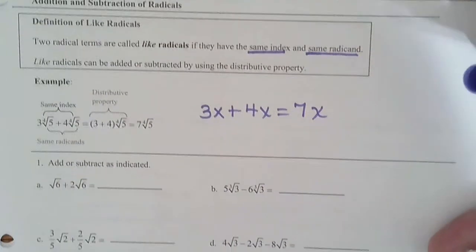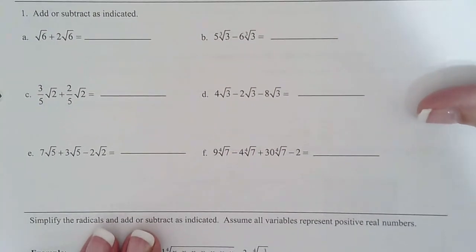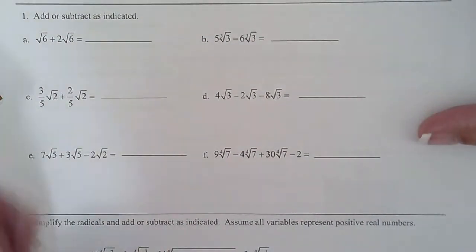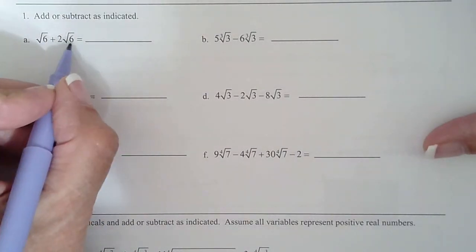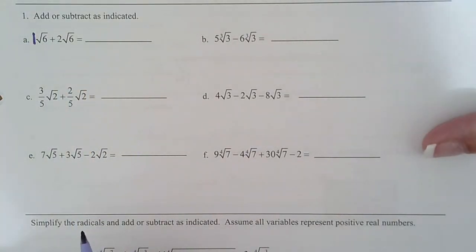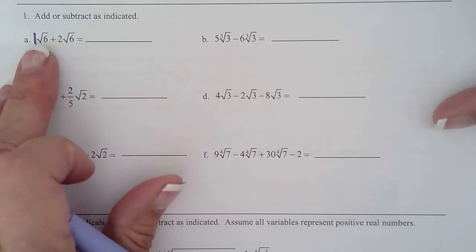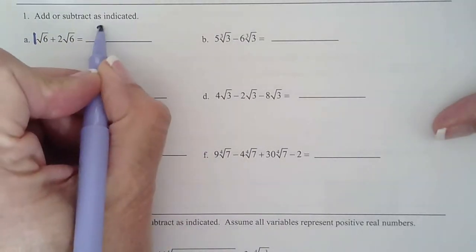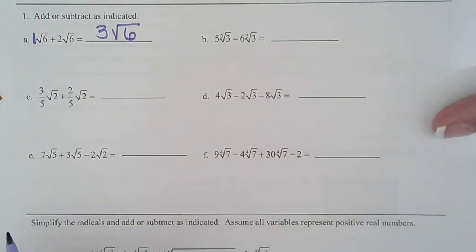So we're going to start off real nice and easy. So on A, are these like terms? Absolutely. They're both a square root. They both have a radicand of 6, just like an x. There's an imaginary one in front and I would put that in because a lot of students, just like with x's, think it's 0 rad6, but it's 1. So 1 rad6 plus 2 rad6 is 3 rad6. Super simple. Just like x's. 1x plus 2x is 3x.